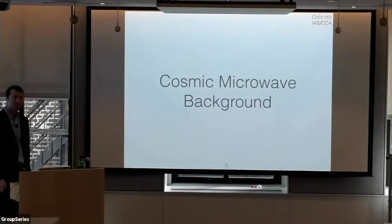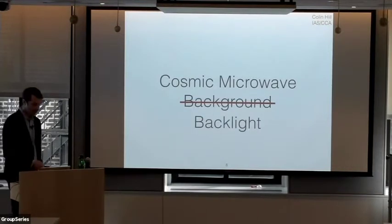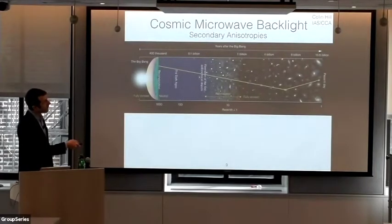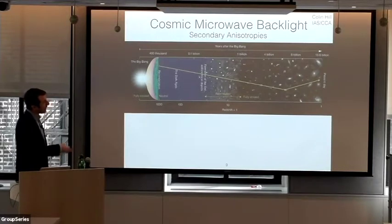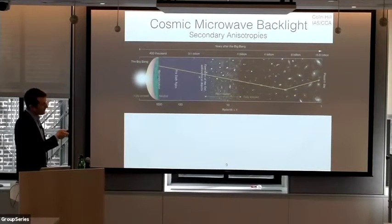For most of this talk, you should think of the CMB not so much as a background but as a backlight illuminating all the structure in the universe between us and the surface of last scattering. In this schematic diagram, we're on the right at the present day; the surface of last scattering is on the left at redshift 1100, a few hundred thousand years after the Big Bang. As CMB photons traverse the universe, a number of interesting things can happen to them — these go under the name of secondary anisotropies in the CMB.